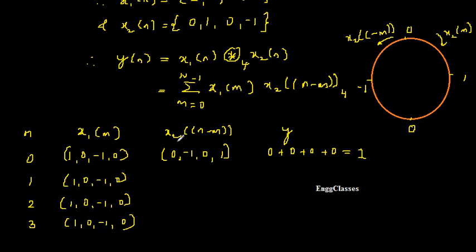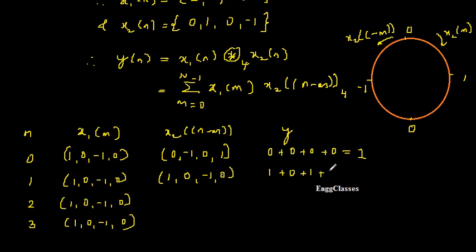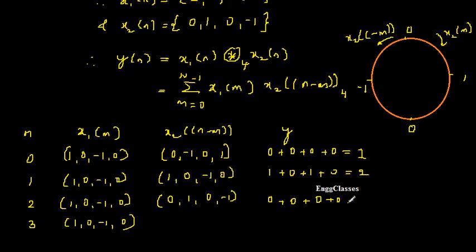For n = 1, shift the circle one step right to get x2((1−m)) = {1, 0, −1, 0}. Multiplying: 1×1 + 0×0 + (−1)×(−1) + 0×0 = 1 + 1 = 2. So y(1) = 2. For n = 2, shift again to get x2((2−m)) = {0, 1, 0, −1}. Multiplying: 1×0 + 0×1 + (−1)×0 + 0×(−1) = 0. So y(2) = 0.